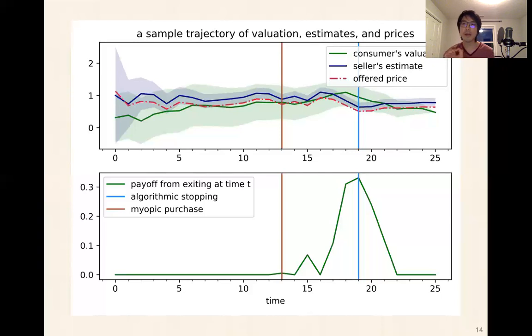Then we get to time step 13. The price kind of dips below the green line, and it's enough to overcome the risk aversion to the point where the payoff from a purchase at time 13 is positive. So if you had a myopic consumer that was just purchasing whenever her utility was positive, she would exit at that point and get a positive payoff. In contrast, the algorithmic stopping method would actually look at how the prices would evolve in the future, look at her current understanding of her own valuation and her risk aversion, and kind of account for all that and decide whether or not it made sense to wait to see if her payoff increases in the future, to wait to see if the price decreases. You can see that this algorithmic stopping method actually stops at time 19. So it waits a little bit longer and gets a much higher payoff as a result.